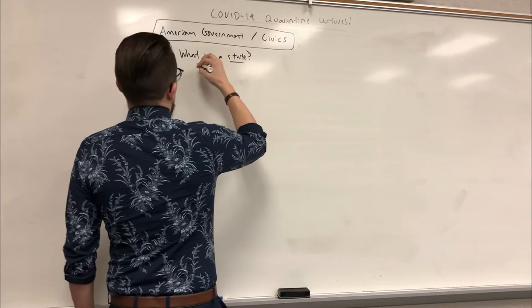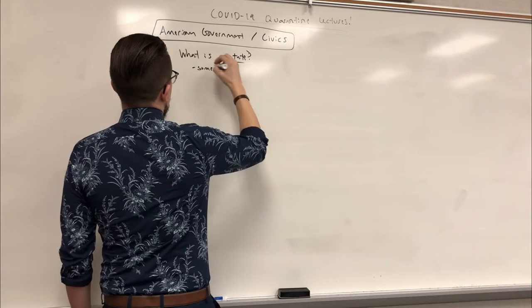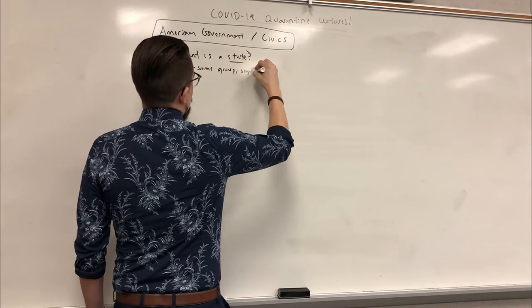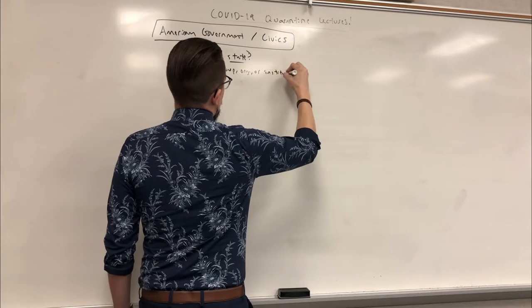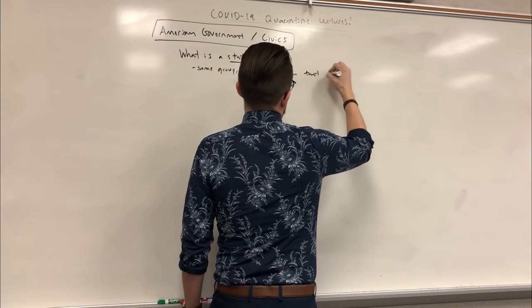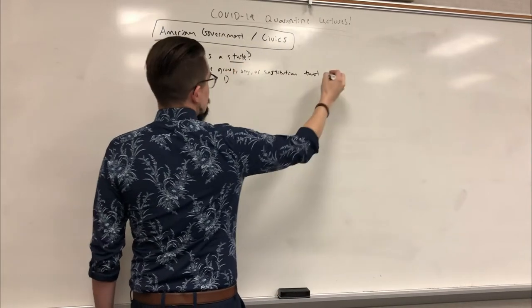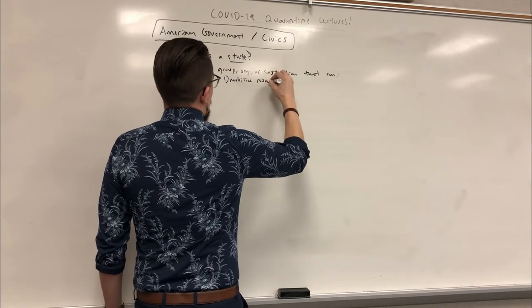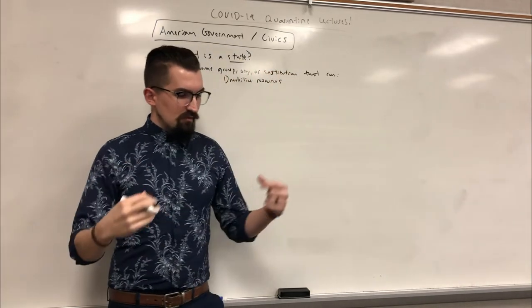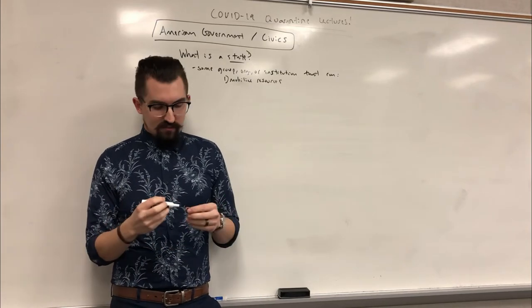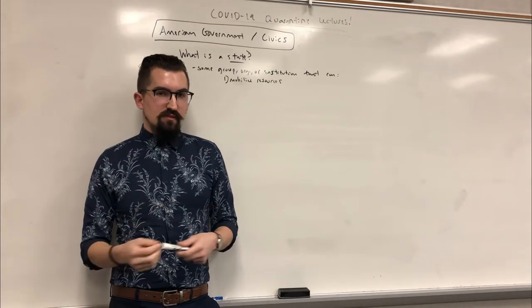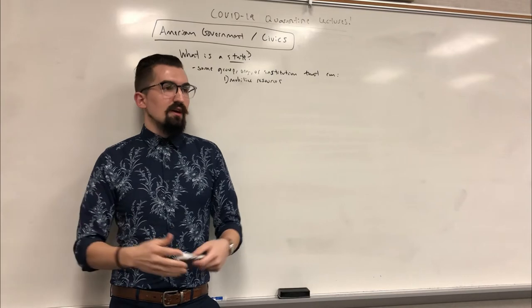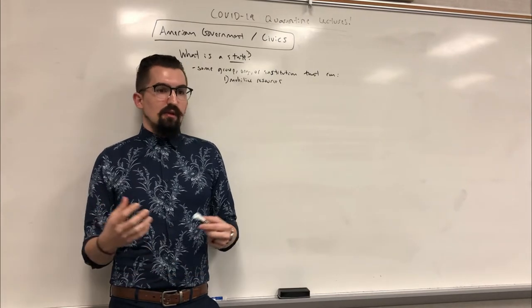A state is essentially some sort of organization, institution, or group that can do a couple of things. It can mobilize resources — so they effectively utilize tax income in modern states to provide social services, infrastructure, military defense budgets, protection, and police forces.